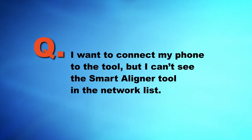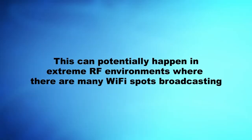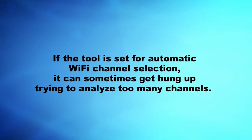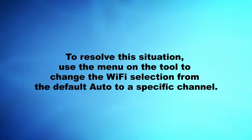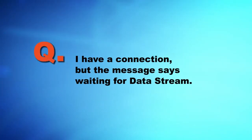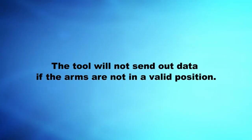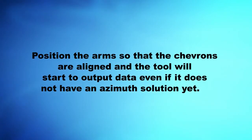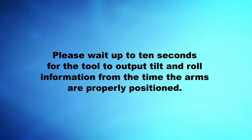I want to connect my phone to the tool but I can't see the Smart Aligner tool in the network list. This could potentially happen in extreme RF environments where there are many Wi-Fi spots broadcasting. If the tool is set for automatic Wi-Fi channel selection, it can sometimes get hung up trying to analyze too many channels. To resolve this, use the menu on the tool to change the Wi-Fi selection from the default auto to a specific channel. You could try different channels or download a Wi-Fi analyzer app to see what the best channel would be. If you have a connection but the message says 'waiting for data stream,' the tool will not send out data if the arms are not in a valid position. Position the arms so that the chevrons are aligned and the tool will start to output data even if it does not have an azimuth solution yet. Please wait up to 10 seconds for the tool to output tilt and roll information from the time the arms are properly positioned.